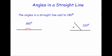In this video we're going to look at angles in a straight line. The angles in a straight line add up to 180 degrees. So as you can see here we've got a straight line and the angles above it would be 180 degrees.